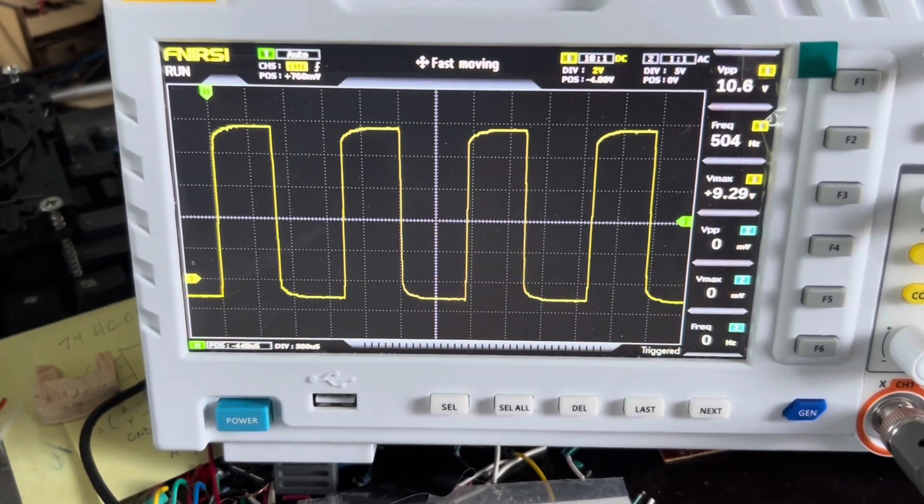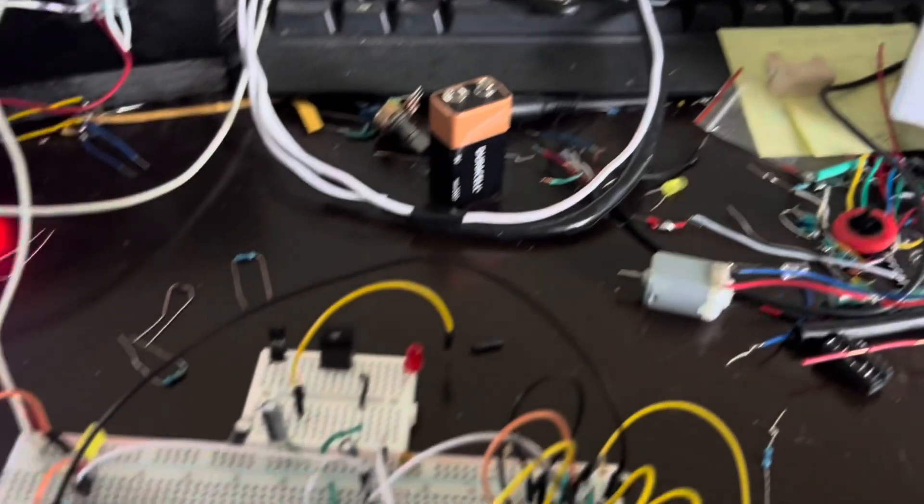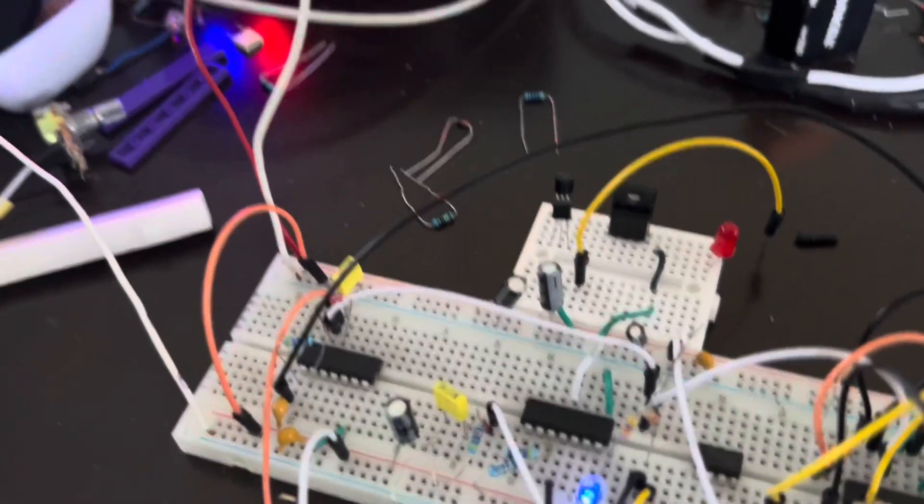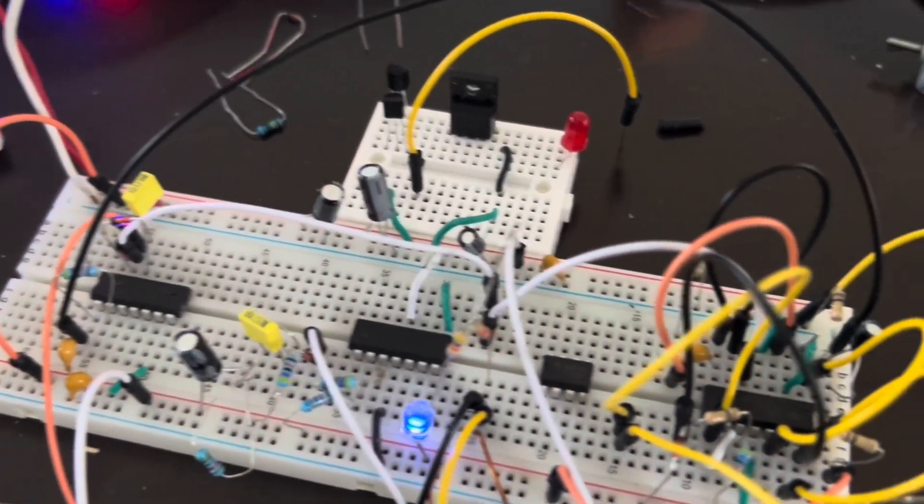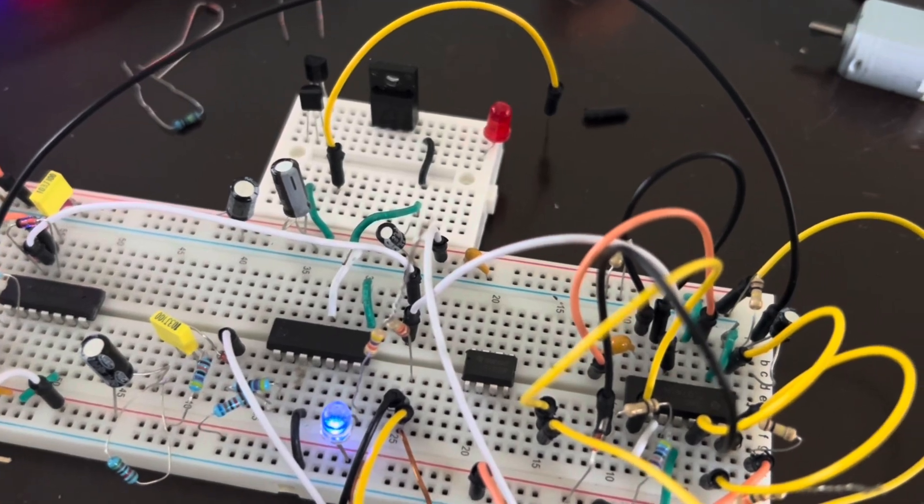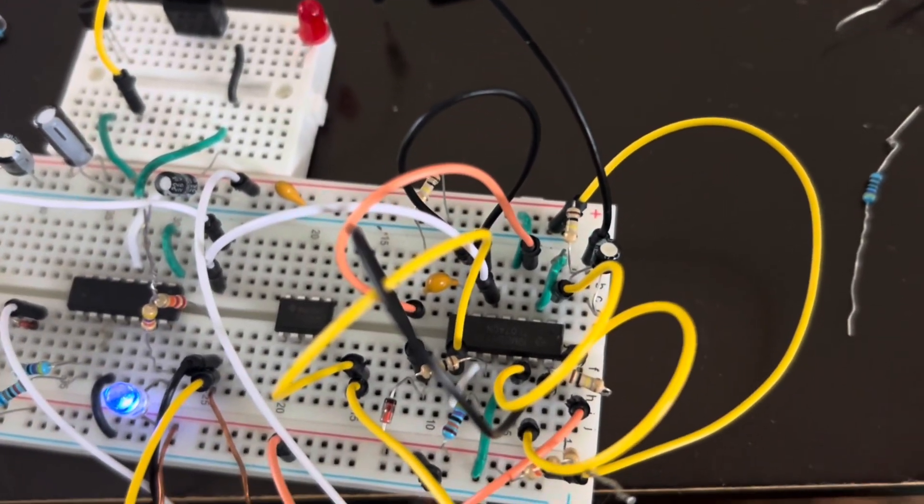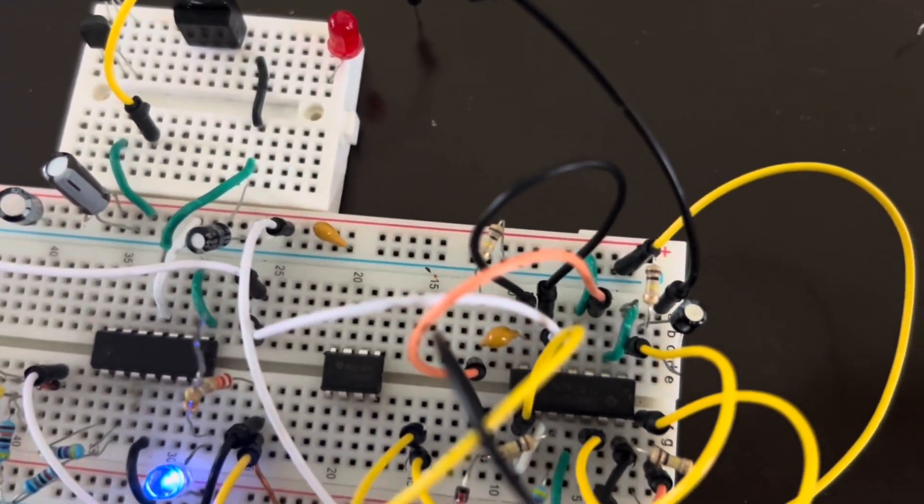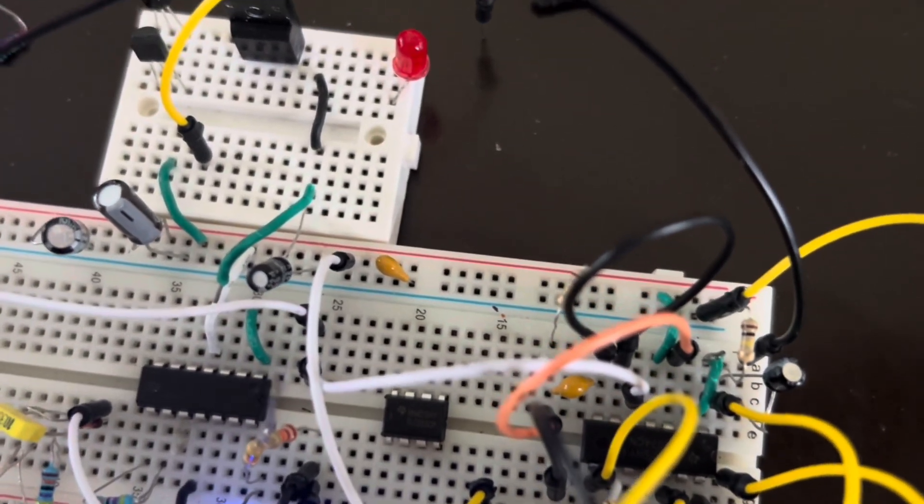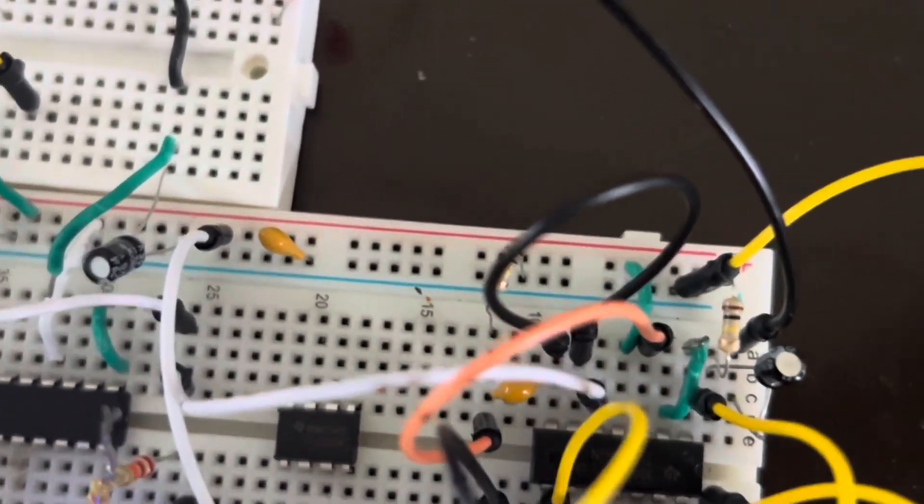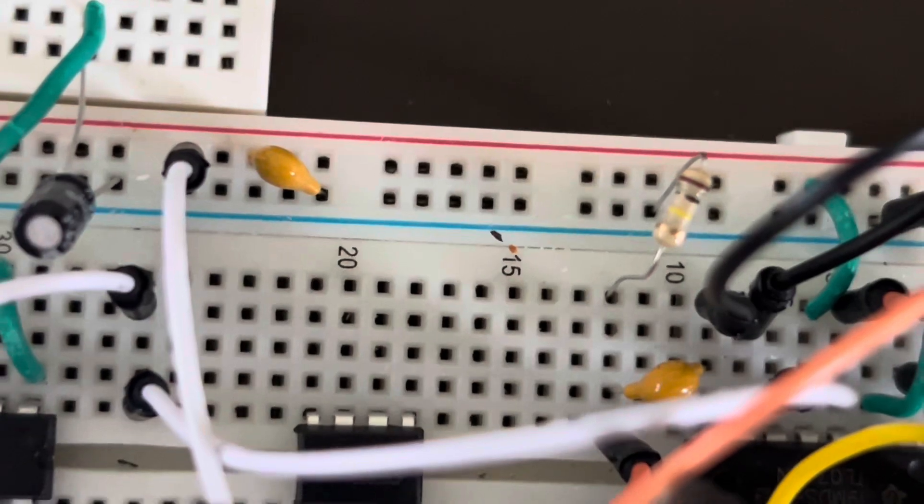And then I have the signal from that going in through a buffer. This is a TL074. The first one is a buffer, then goes through this little capacitor, 100k resistor to ground.